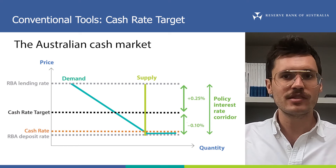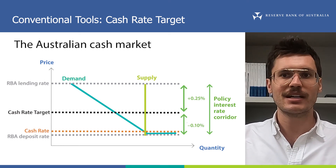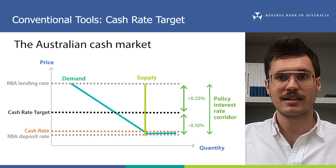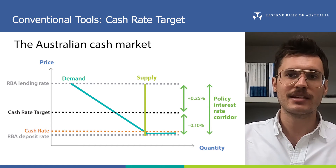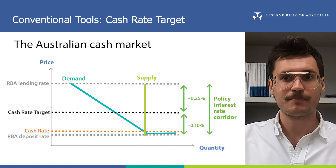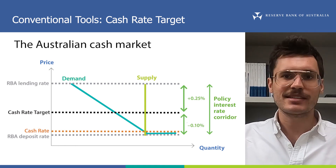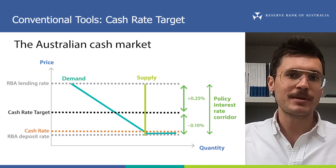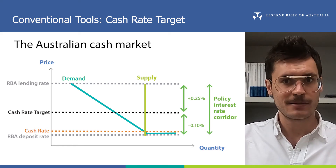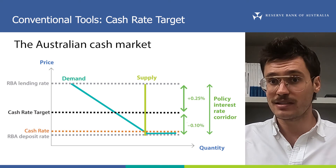So in summary, the RBA uses the policy interest rate corridor to ensure the cash rate trades near its target. In a world where other monetary policy tools are used alongside the cash rate target, the supply of ES balances can increase, and this may cause the cash rate to drift below its target. But the policy corridor will ensure the cash rate remains near its target, and in any case above the RBA deposit rate, which acts as a floor for the cash rate and all other interest rates in the economy. This process we've just talked about is called monetary policy implementation.